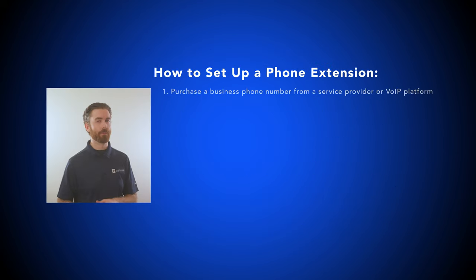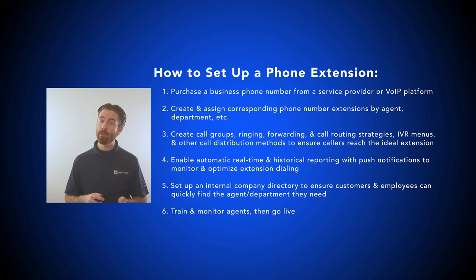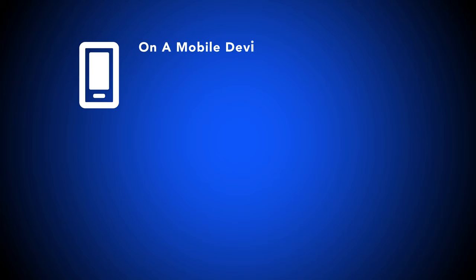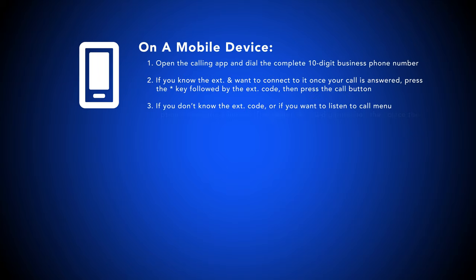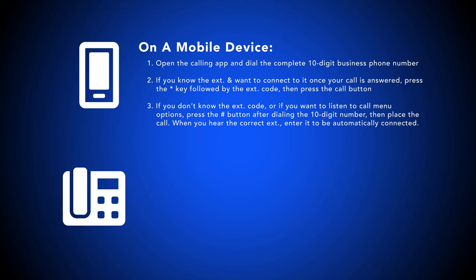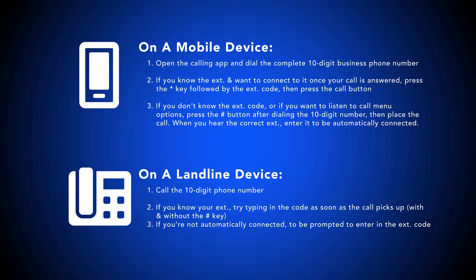The process of setting up phone system extensions varies depending on the type of business phone system selected, but the basic process is shown here for your convenience. Employees dialing an internal extension to another department or agent on a VoIP or landline phone do not need to enter the 10-digit business phone number before the extension code, because they're not placing an external call. Here are the steps involved if calling an extension from a cell phone or mobile device, and here are the steps for calling an extension from a landline.